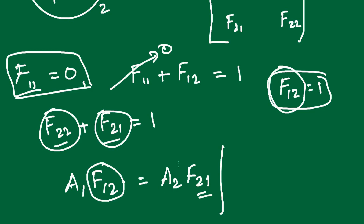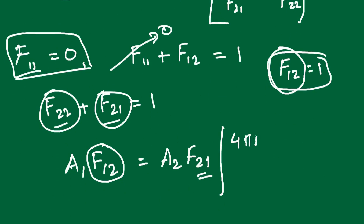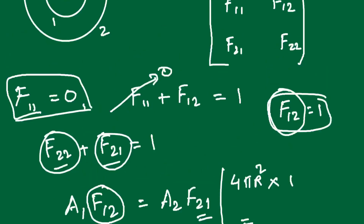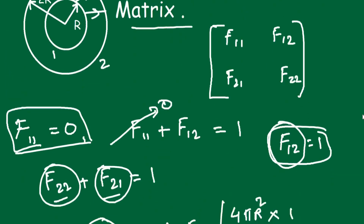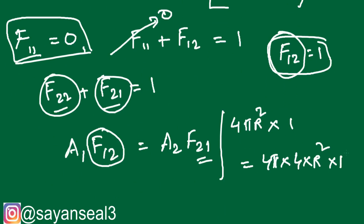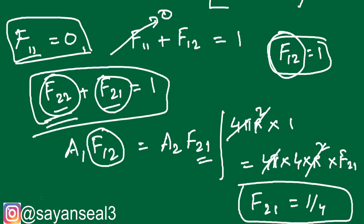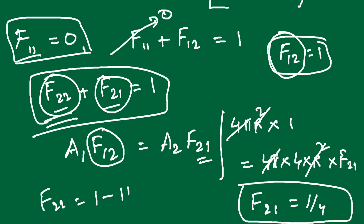A1 = 4πr² (surface area of the inner sphere). So 4πr² × 1 = A2 × F21. A2 = 4π(2r)² = 16πr². Cancelling 4πr² gives F21 = 1/4. Then from the summability rule, F22 = 1 − 1/4 = 3/4.